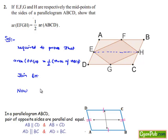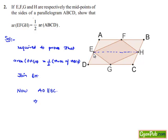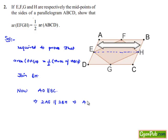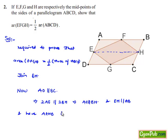We know that in parallelogram ABCD, AD is parallel to BC since opposite sides are parallel and also equal. Since E is a midpoint of AD, we can write AD as 2 times AE, and since H is the midpoint of BC, we can write BC as 2 times BH, which implies AE is parallel to BH. Since EH passes through the midpoints of AE and BH, EH is also parallel to AB, and therefore AEHB is a parallelogram.